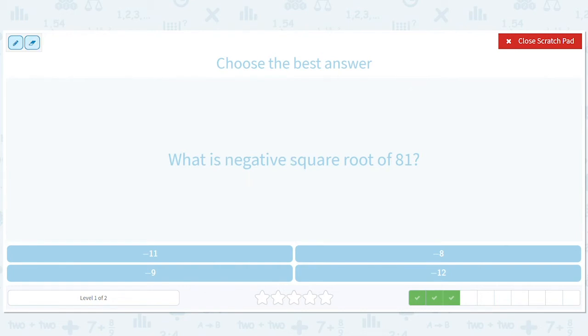What's interesting is that if you instead do negative 9 times negative 9, the negatives cancel, and you still get 81. So negative 9 is also a square root of 81.